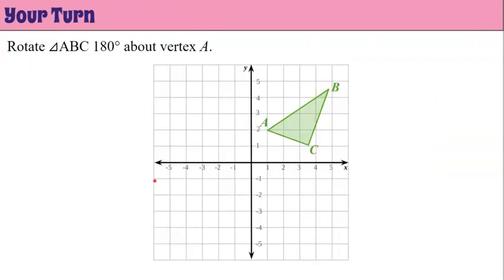Now it's your turn. I would like you to rotate triangle ABC 180 degrees about vertex A. Go ahead and pause the video and come back when you're ready to check your work.